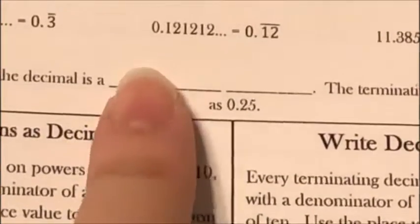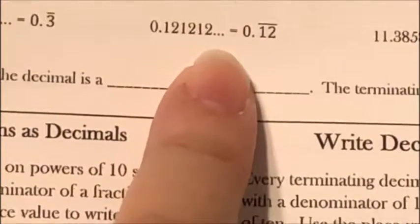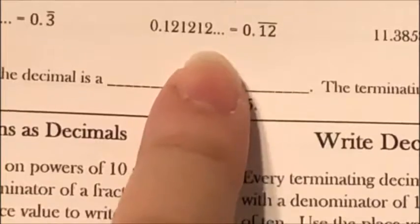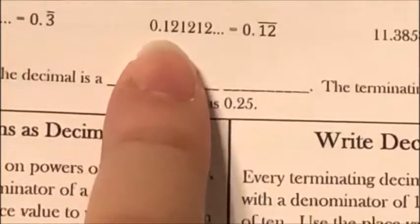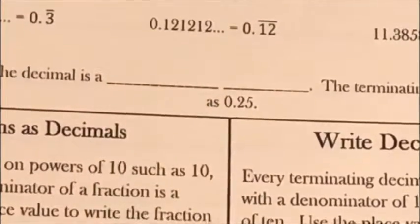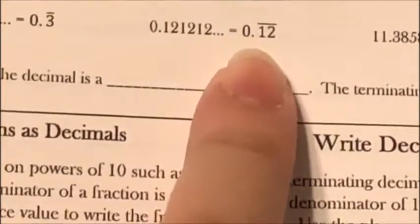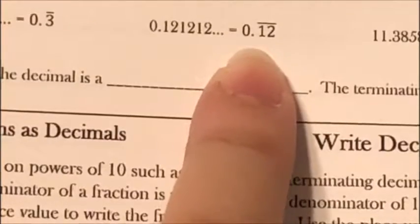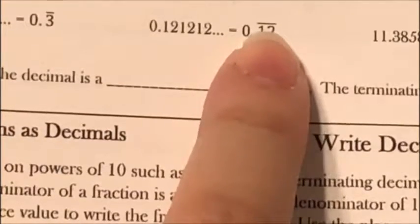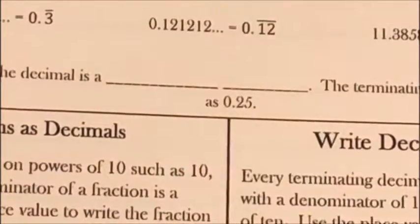I also have 0.121212... — the one and the two are repeating; that's the pattern that repeats over and over again. So when I write this, I have 0.12 with the bar over both the one and the two.